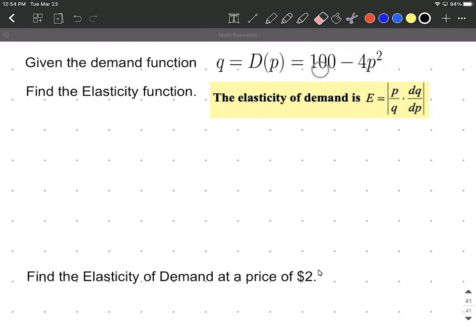q, we can replace with 100 minus 4p squared. But the other part here, dq dp, we have to do that calculation. So dq dp, the derivative of q with respect to p. Or in our case, you could also think of that as meaning the first derivative of d.